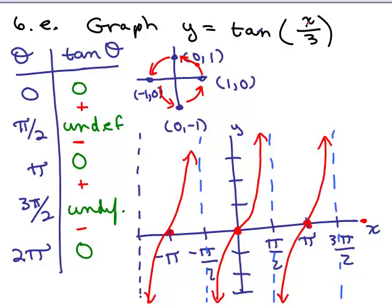And we're asked to graph tangent of x over 3. So the period, well, the b value, remember you could think of that as 1 third. So you take the period of the tangent function, just the plain old tangent function, which is pi, and you divide by 1 third, which means multiply by the reciprocal. So the period is going to be pi times 3, or 3 pi.